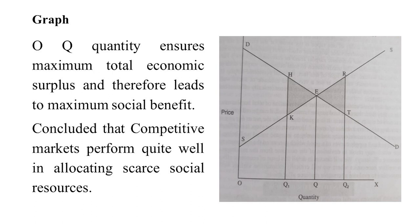Generally, there is no alternative allocation of resources that can yield greater economic surplus. However, perfect competition is an assumption — it is generally assumed that the number of buyers and sellers is large and they are selling a homogeneous product. But apart from this, monopoly markets also exist, and other market forms are there, so the perfect conditions where all assumptions are fulfilled are not always possible.